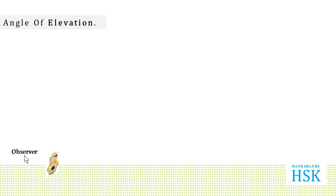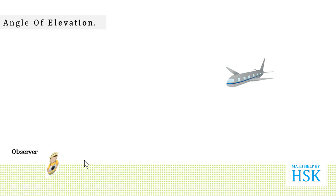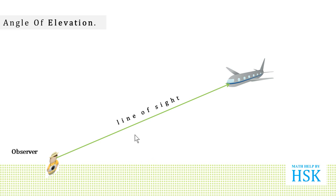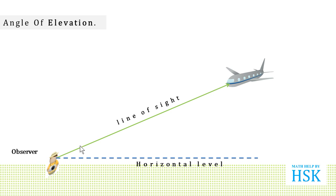To study angle of elevation, we consider that we have an observer standing on the ground and he observes an aeroplane flying in the sky. The line joining the eyes of the observer and the point on the aeroplane which he is viewing is known as the line of sight. And the horizontal line passing through the eyes of the observer is known as the horizontal level. The angle between the line of sight and the horizontal level is the angle of elevation.